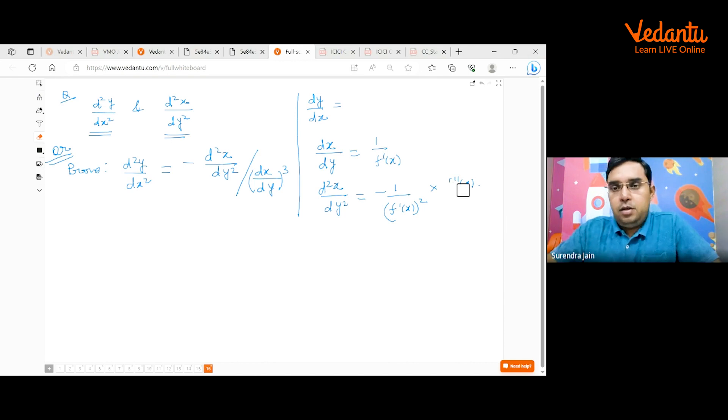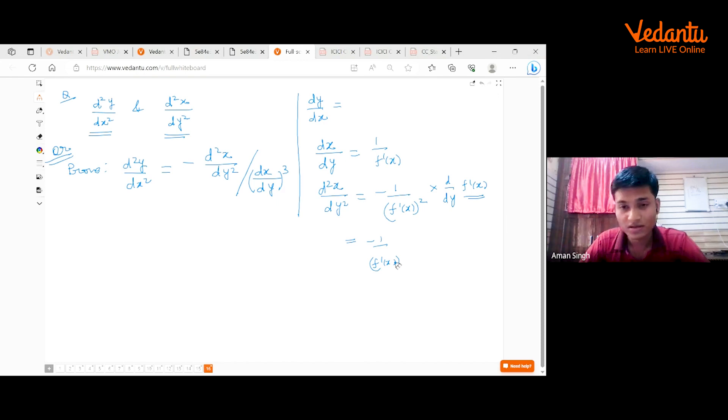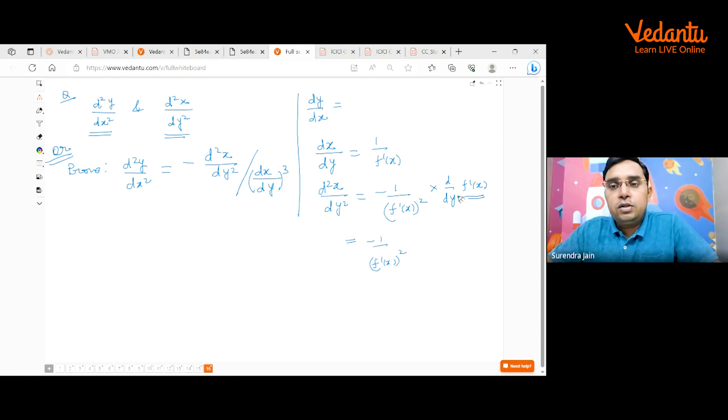If you are differentiating, there is something called chain rule. So you are differentiating this thing with respect to Y. So first you have written minus 1 upon f'(x) whole square. That is correct. Now you will be differentiating f'(x) with respect to Y, not with respect to X. So this will be minus 1 upon f'(x) whole square into f''(x) into 1 upon f'(x). And this is f'(x). So because of this thing you will get here f'(x) whole cube.